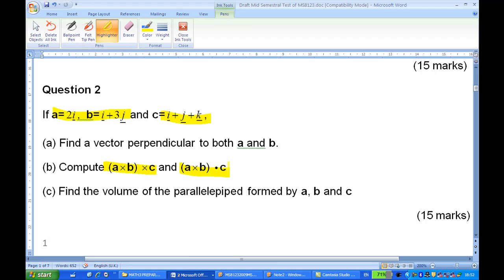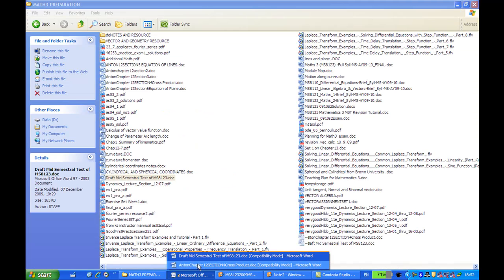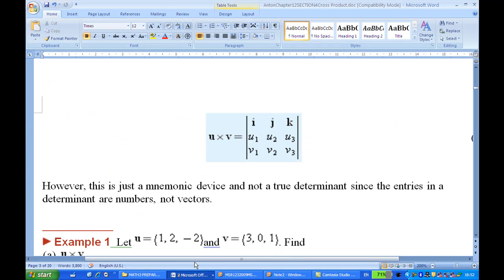So to do this, we must know how to do the a cross b first and you may want to recall again how do we do the cross product between two vectors. This is in Howard Anton chapter 12 section 4.